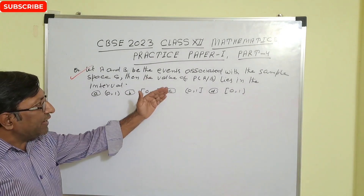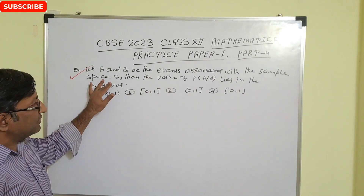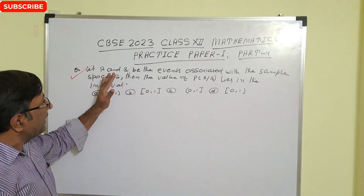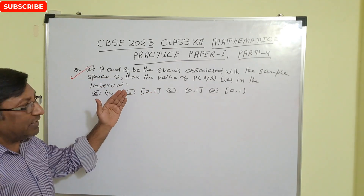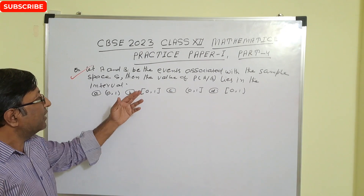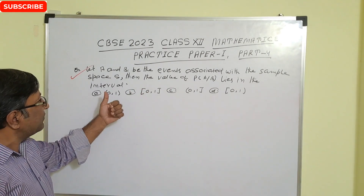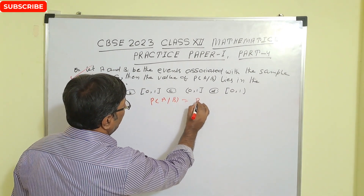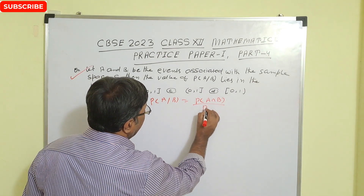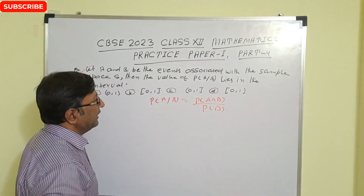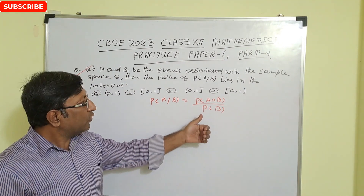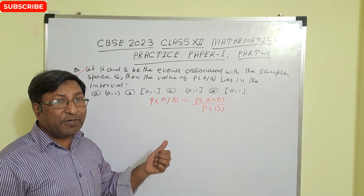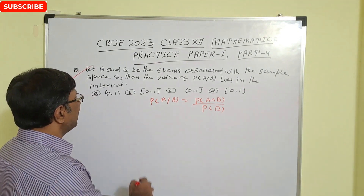Next question: let A and B be events associated with the sample space S. Then the value of probability of A given B lies in which interval? Probability of A given B equals probability of A intersection B divided by probability of B. Since A and B are associated with sample space S, the probability of any event lies between 0 and 1, so the correct answer is the closed interval [0, 1].